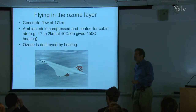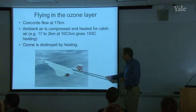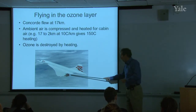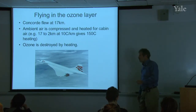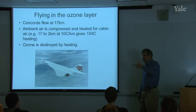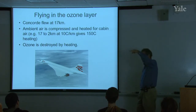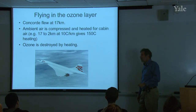Why would you want to fly at that altitude? It turns out it has mostly to do with the efficiency of the engines. That's true with subsonic aircraft as well — the reason they fly at 35,000 to 37,000 feet is because the engines are most efficient at that altitude. For the Concorde, the more efficient altitude was even higher, at 17 kilometers.